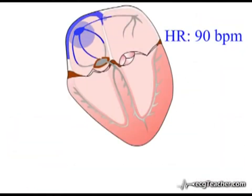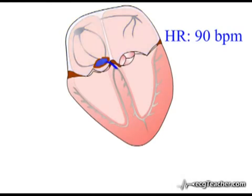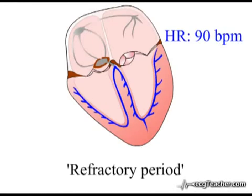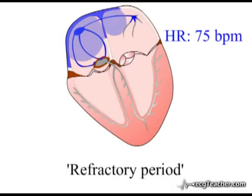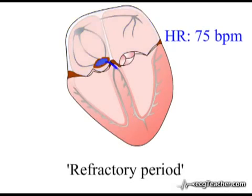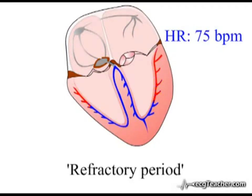As with any electrically active cardiac tissue, depolarisation of the right or left branch of the bundle of His is followed by a refractory period — illustrated here in red — when the tissue of the branches will not depolarise in response to further signals. Furthermore, the refractory period of the ventricular conducting system adjusts in response to the rate at which depolarising events arrive. Specifically, the refractory period of the left and right bundle branches becomes more prolonged as the heart rate slows.